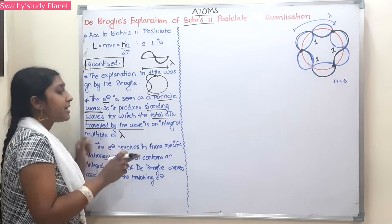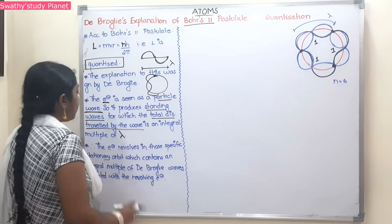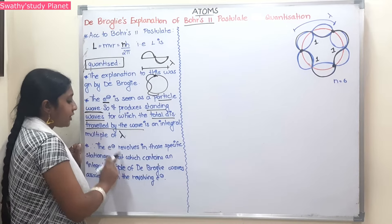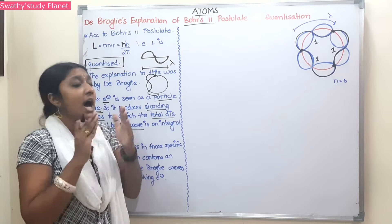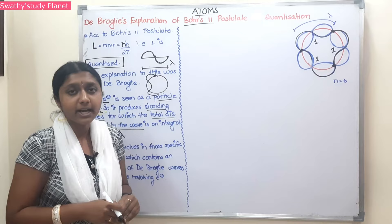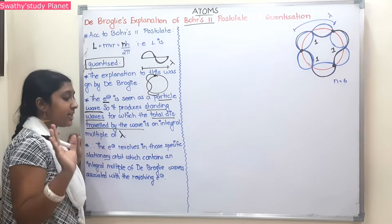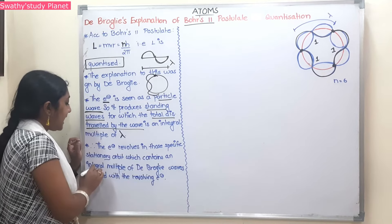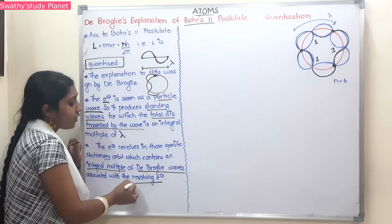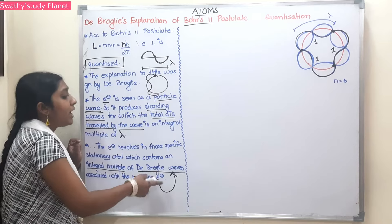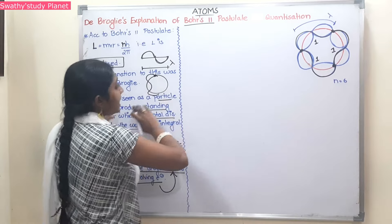Therefore, the electron revolves in those specific stationary orbits. This is already the Bohr model — the electron revolves in any orbit, and if it revolves around the orbit, the angular momentum is an integral multiple of h by 2π. That is what we will prove. The electron revolves in specific orbits which contain an integral multiple of de Broglie waves associated with the revolving electron, where the integral number is n.